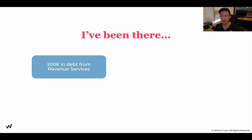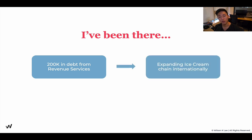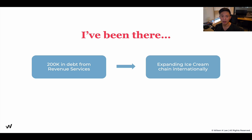I've definitely been there — I'm not just preaching it. I didn't like math, I didn't like bookkeeping, which was the reason why I was slapped with a big fine of $200,000 from Canada Revenue Services. We were actually able to shake that off and expand our dessert chain internationally to seven locations before it was acquired earlier this year. I'm sharing this as a big pitfall that I personally experienced, and I don't want that for you.